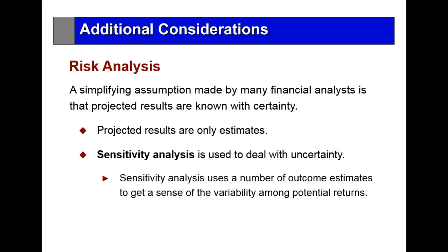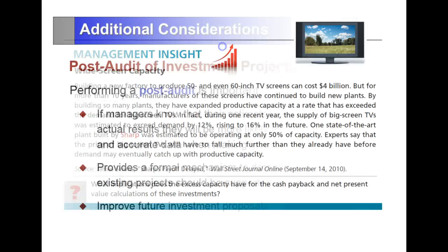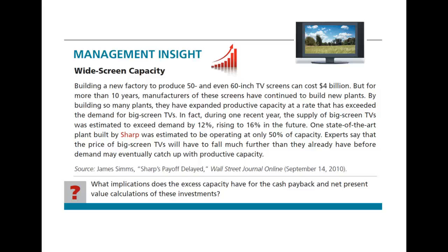Sensitivity analysis is used to deal with certain types of uncertainty in capital budgeting. For example, building a new factory to produce 50 or 60-inch TVs can cost in excess of $4 billion. For more than 10 years, manufacturers continued building new plants, expanding capacity at a rate that exceeded demand for big-screen TVs. During one recent year, supply exceeded demand by 12%, and one state-of-the-art Sharp plant was operating at only 50% capacity. Experts say prices will have to fall further before demand catches up with productive capacity.